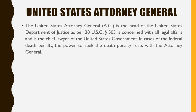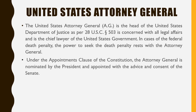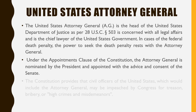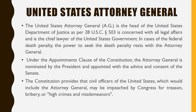The US AG is the head of the US Department of Justice, concerned with all legal affairs, and is the chief lawyer of the US government. In cases of the federal death penalty, the power to seek the death penalty rests with the AG. Under the Appointments Clause of the Constitution, the AG is nominated by the President and appointed with the advice and consent of the Senate. The Constitution provides that civil officers of the United States, which would include the AG, may be impeached by Congress for treason, bribery, or high crimes and misdemeanors.